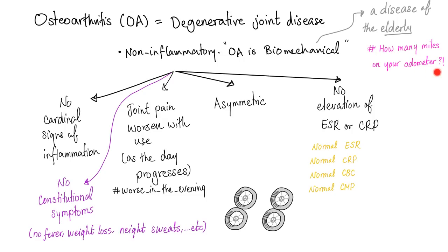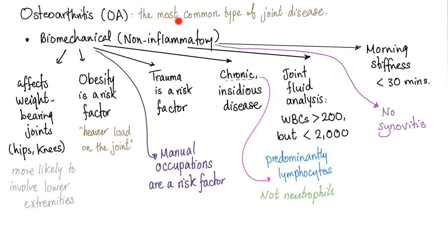Osteoarthritis is a disease of the elderly, especially primary osteoarthritis. It is by far the most common type of joint disease — biomechanical and non-inflammatory. Therefore, it affects the weight-bearing joints: the knees, the hips, etc. You're more likely to get it in the lower extremities because they carry your entire body weight. Obesity is a risk factor, trauma is a risk factor, and manual labor is a risk factor. It's a chronic, insidious disease.